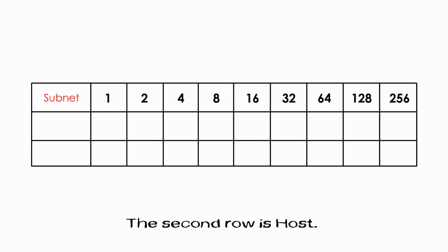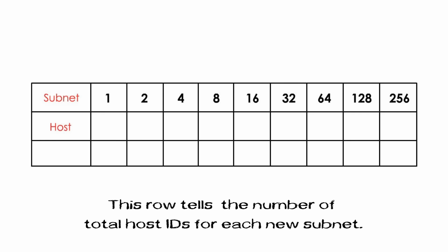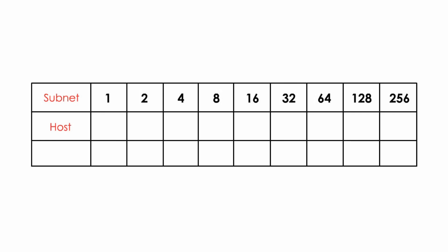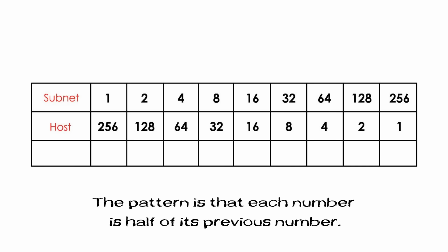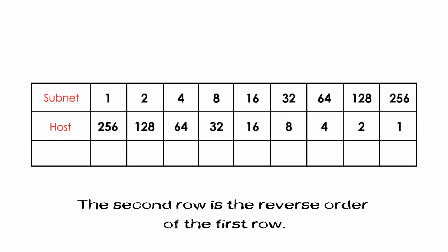The second row is host. This row tells the number of total host IDs for each new subnet. Start with 256, then 128, 64, 32, 16, 8, 4, 2, and 1. The pattern is each number is half of its previous number, or the second row is the reverse order of the first row. Everyone can handle this!